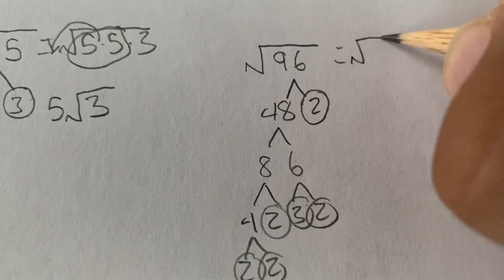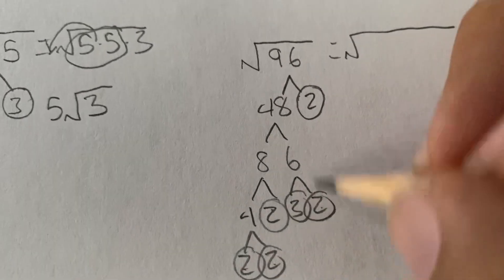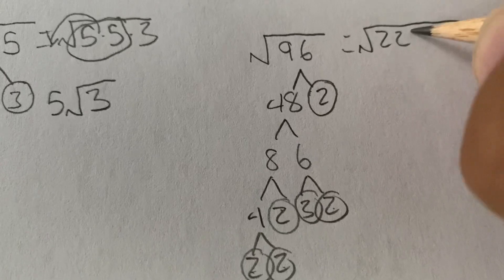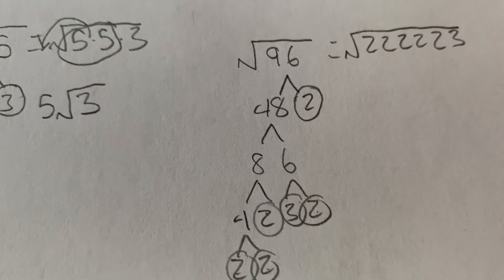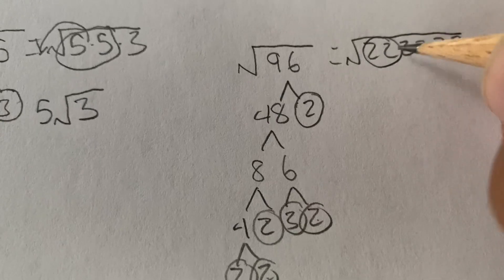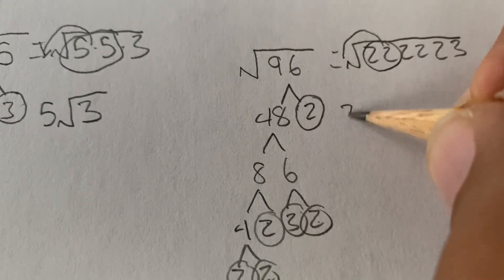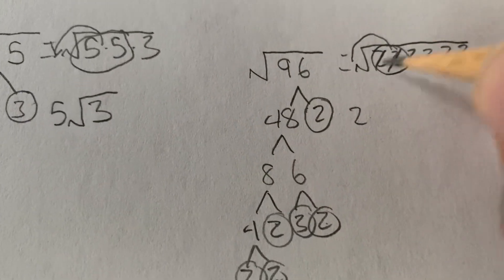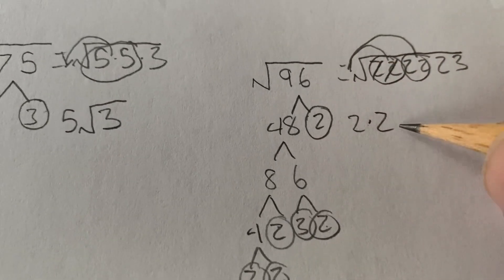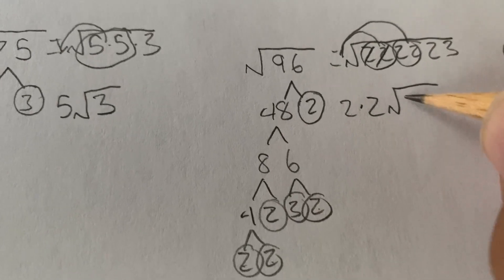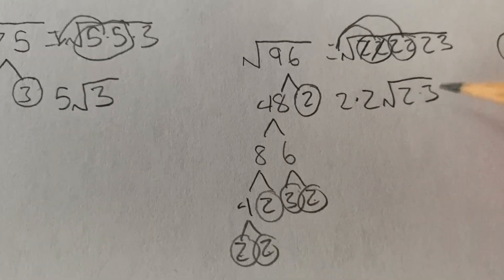So it's going to be 1, 2, 3, 4, 5 twos. So 1, 2, 3, 4, 5 and a 3. So this pair becomes 1, 2 outside. So there it is. Now this pair becomes another 2 on the outside. And we're left with a 2 and a 3 on the inside.